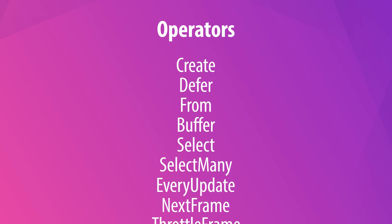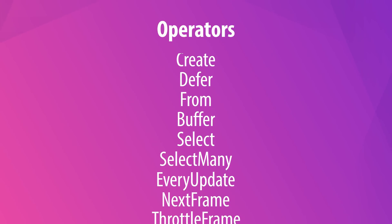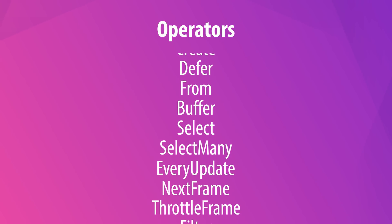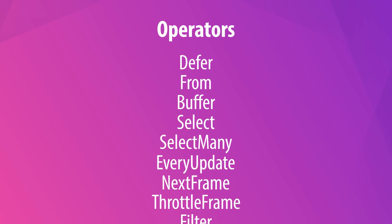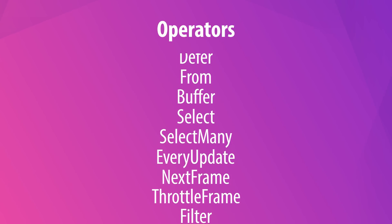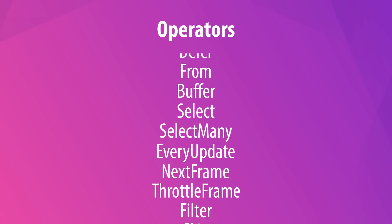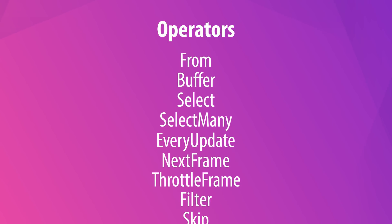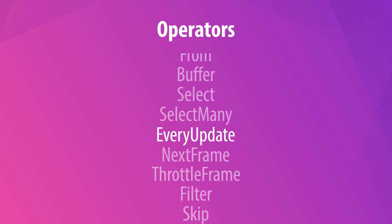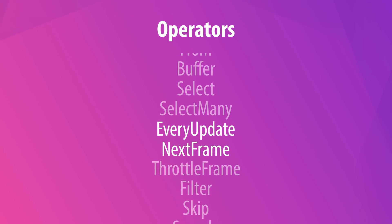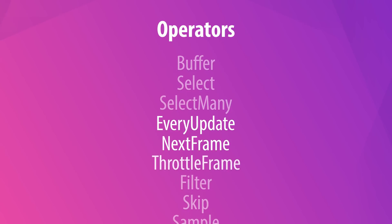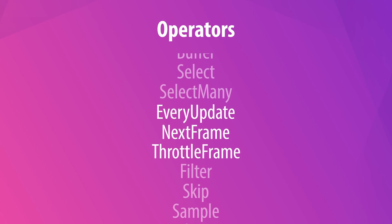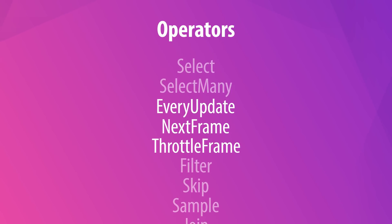While there's generally an overlap, many implementations come with their own special operators in addition to the ones that are typically included. EveryUpdate, NextFrame, and ThrottleFrame are among the special operators that are included in UniRx.